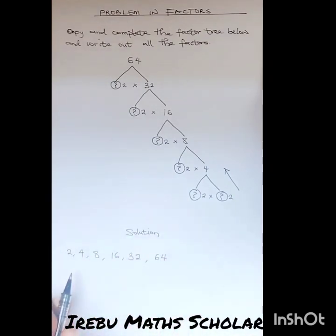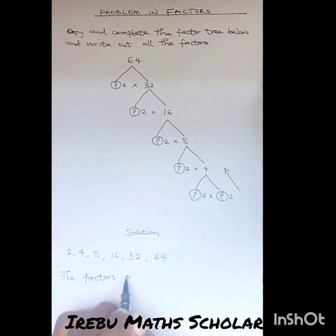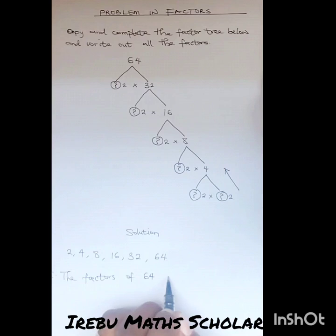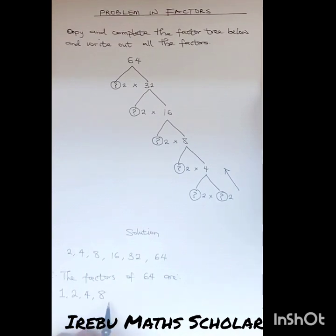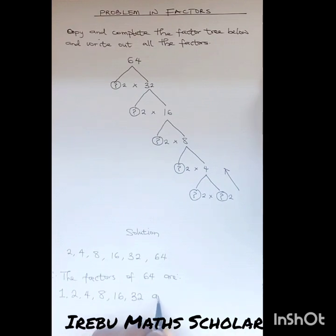So the factors of 64, therefore, are: we have 1, because 1 must always be there, then 2, 4, 8, 16, 32, and 64.